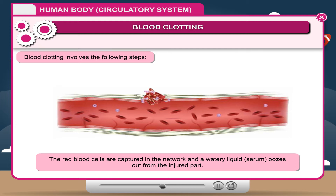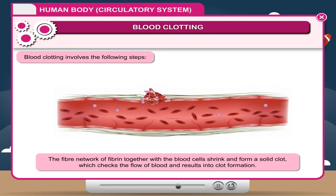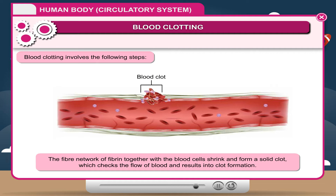Step two: the red blood cells are captured in the fibrin network and a watery liquid, serum, oozes out from the injured part. Step three: the fiber network of fibrin together with the blood cells shrinks and forms a solid clot, which checks the flow of blood and results in clot formation.